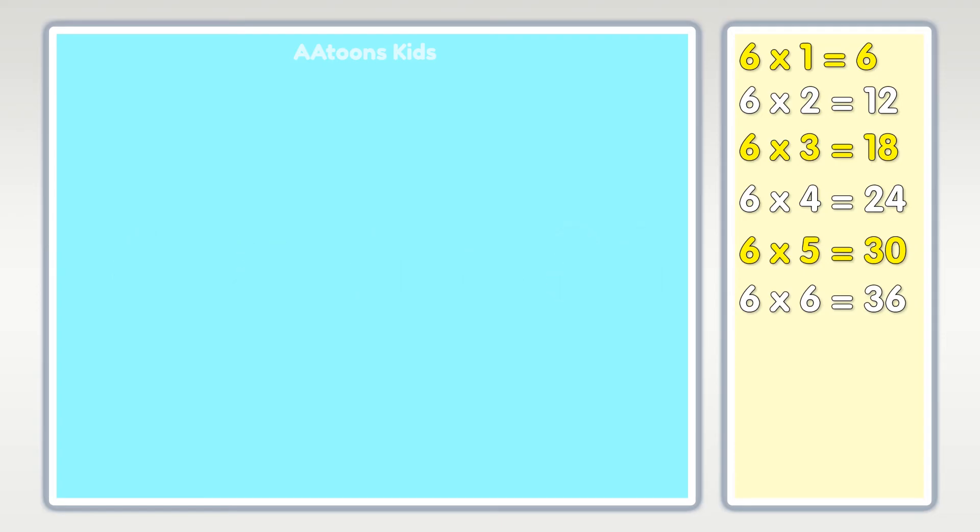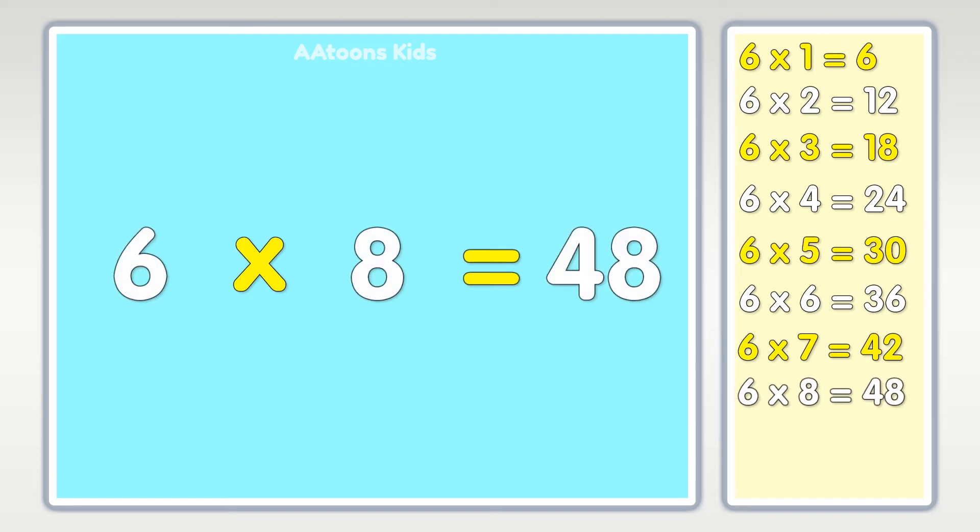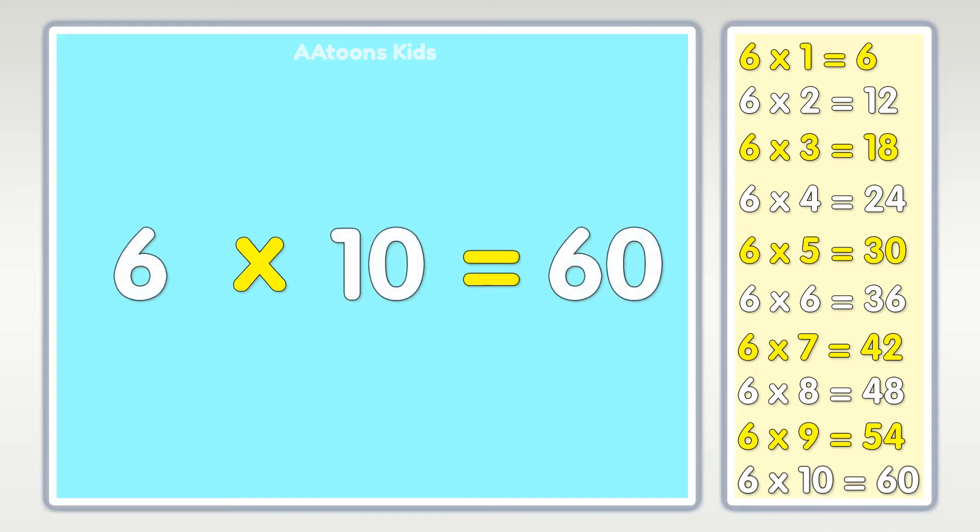Six times seven is forty-two, six times eight is forty-eight, six times nine is fifty-four, six times ten is sixty.